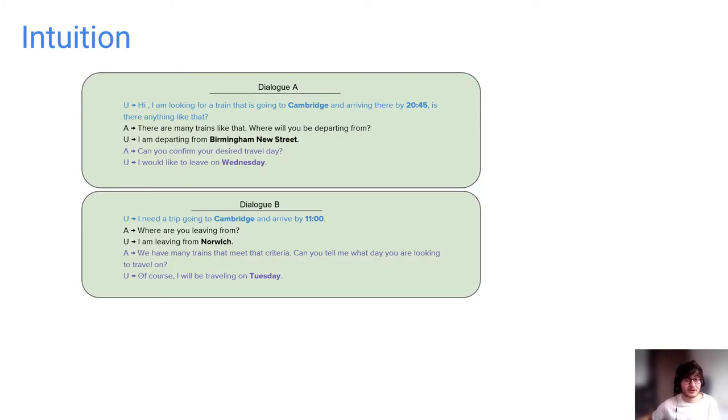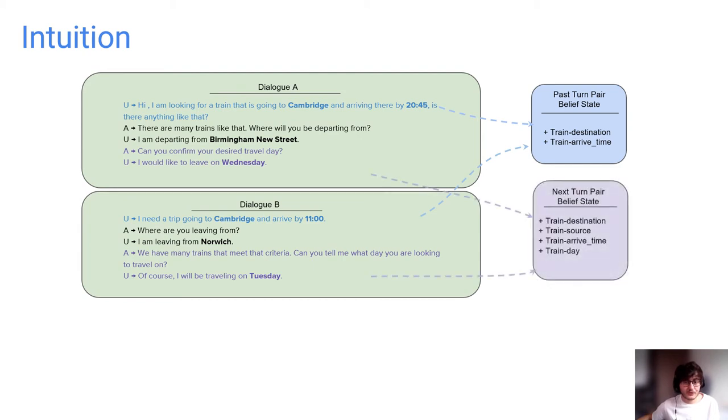Let me now explain the intuition behind this claim. Here you can see two dialogues, both in the train booking domain. If we look more closely, we can see that these dialogues share the same belief state in the first turn pair, where both discuss the destination of the train and its arrive time, just in different syntax. Looking further, we can also see that this is also true for the last turn pair.